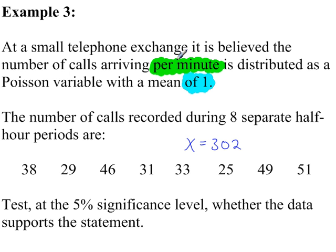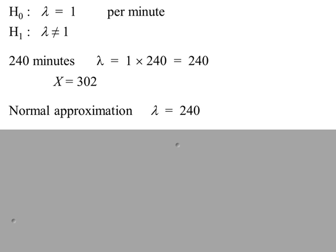Now as before we need to scale the value of lambda. So we have a lambda value here which is for a 1 minute interval. Now down here it says we have 8 separate half hour periods, or 8 periods of 30 minutes each, or 240 minutes in total. So modifying lambda, lambda was 1 for a 1 minute interval. We are looking at a 240 minute interval. So times 240. Our new value. This value is more than 10. So the normal approximation is justified. Here is the total evidence given.